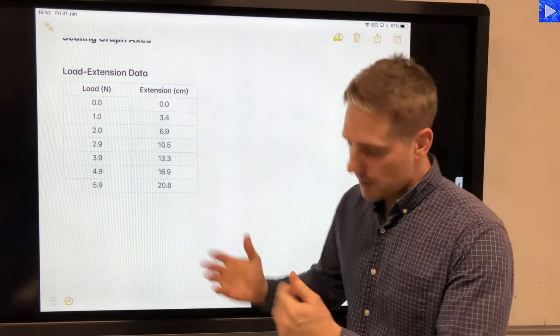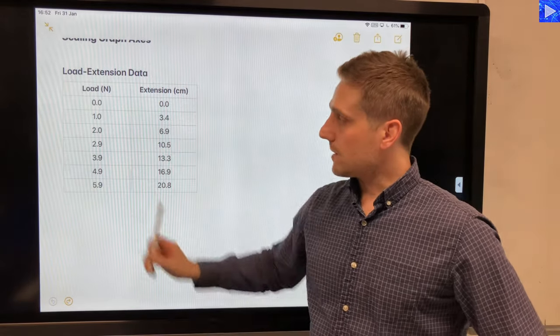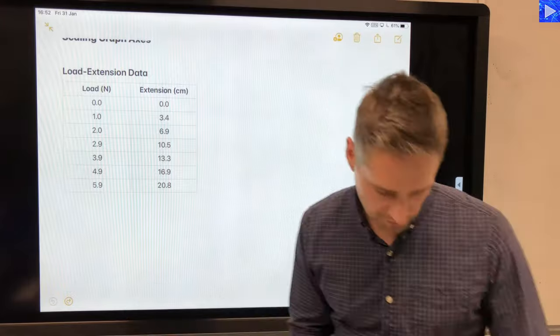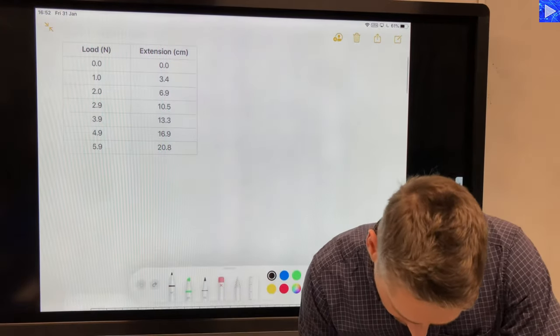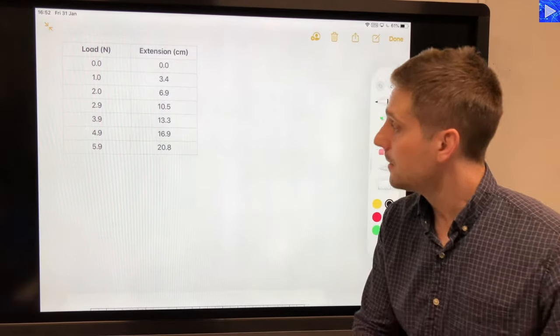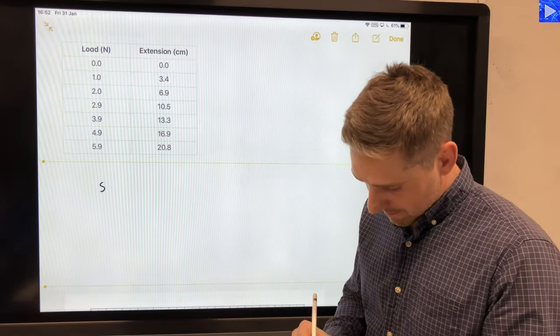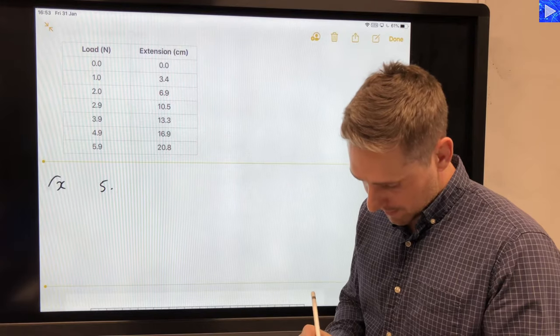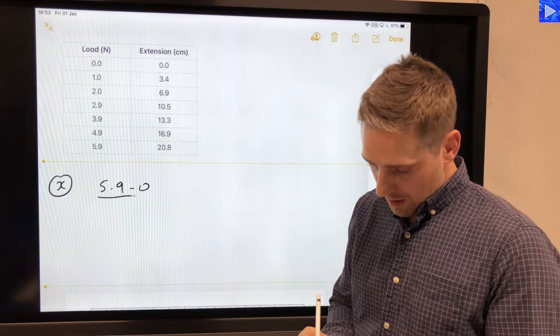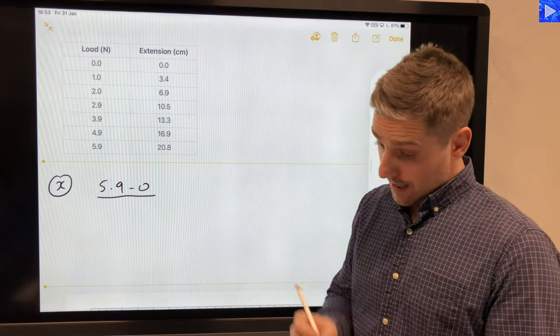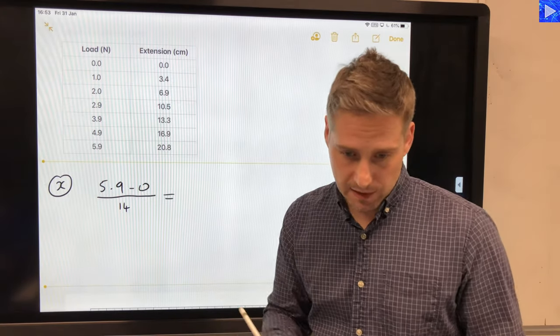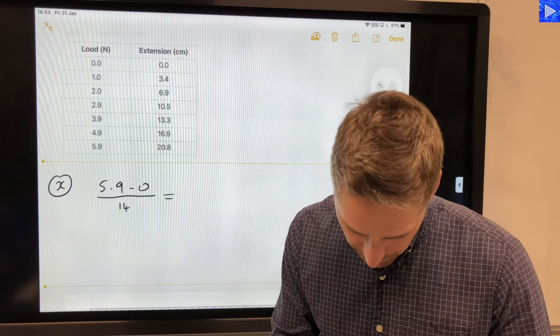So let's have a look at what that looks like. So starting with the x data, the difference is 5.9 minus 0, so when it's minus 0 it's obviously the same value, so that's nice and easy. We've got 5.9—I'll just write an x here, this is my x data—5.9 minus 0 over 14. In the x direction we're dealing with 14 squares. Okay, so that is going to come out as 0.42.